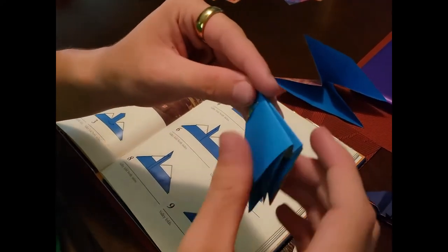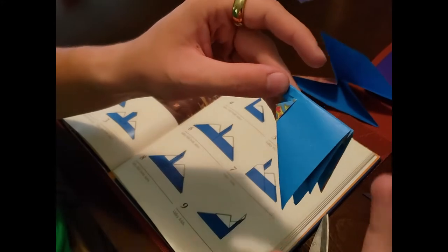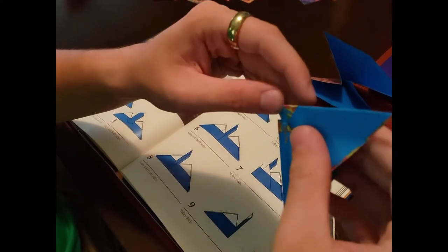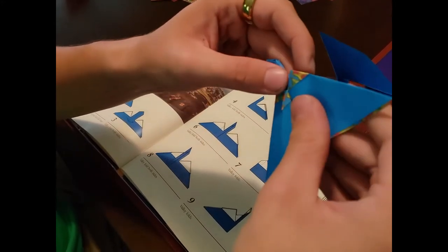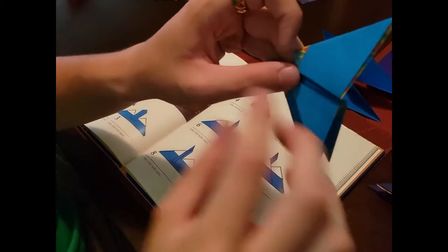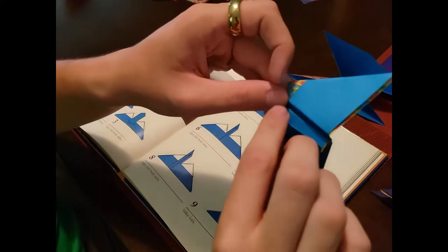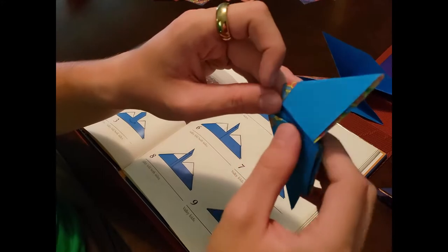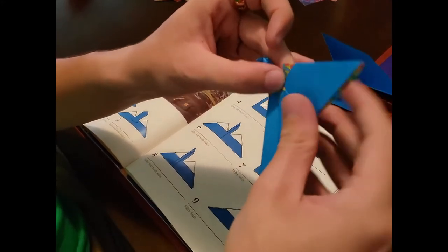And now, what you're going to do after you do that is take that same mountain you just folded and fold it. You should, when you fold it back over, you should see this, the edge of the first one.